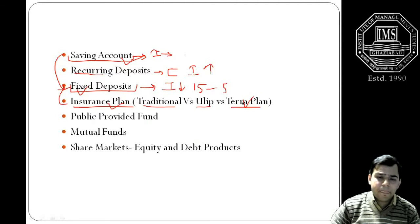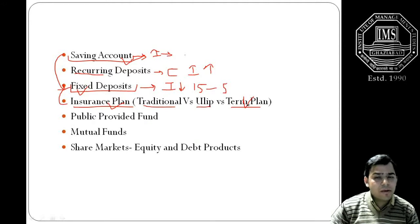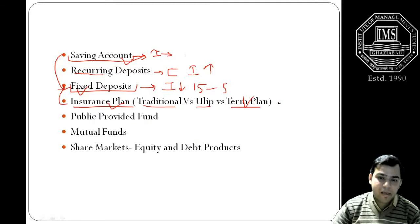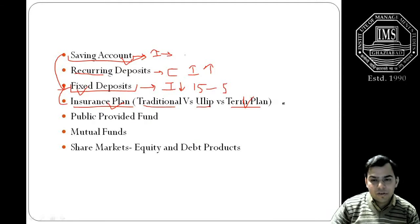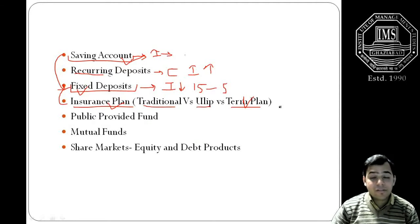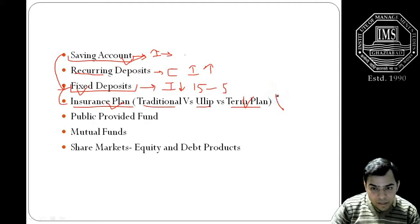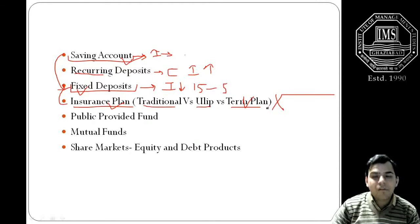So now the insurance are working as a risk protection plus investment. Term plan is actually the plan in which you are not going to get any benefits if you survive, but yes, there is a huge risk cover. For example, if you take a term plan and you are paying 5000 rupees in a year and nothing happened, nobody dies, so this 5000 will be regarded as a cost of the plan.